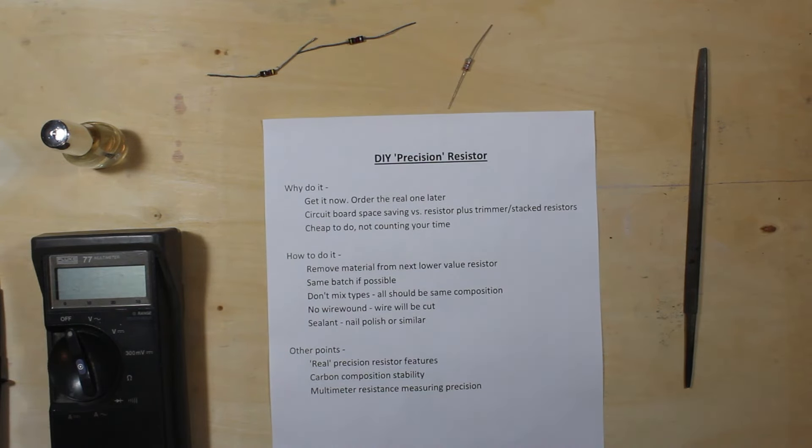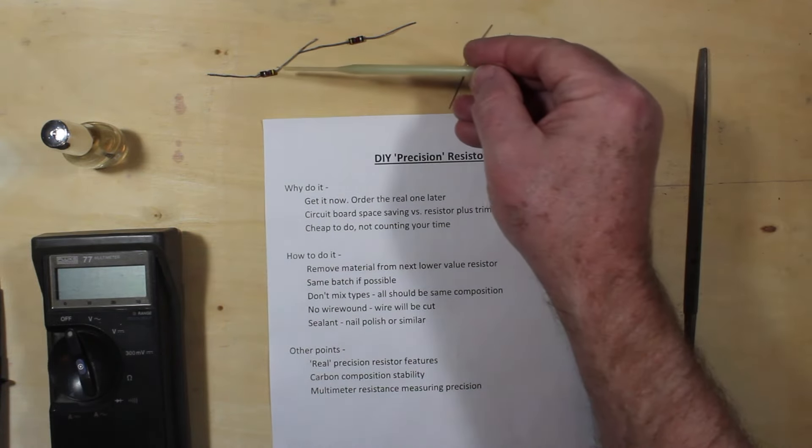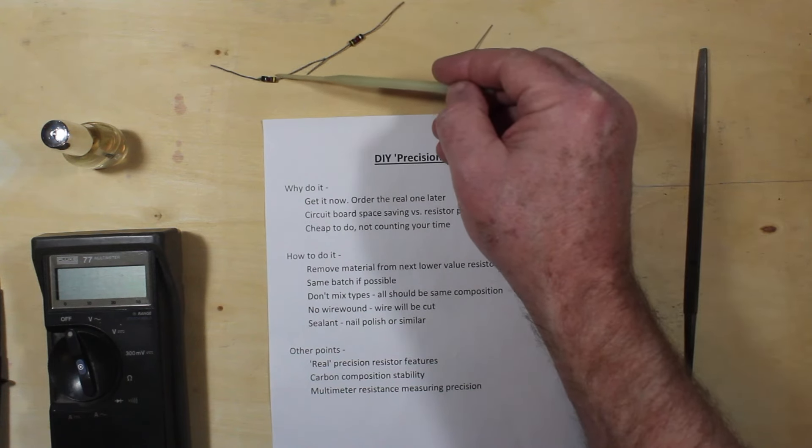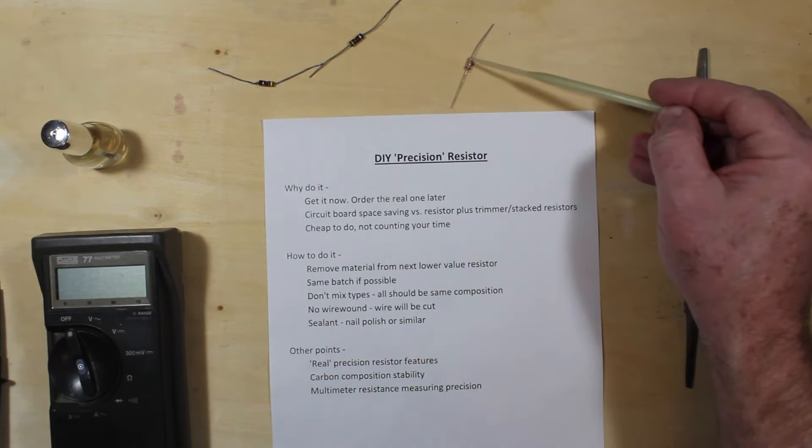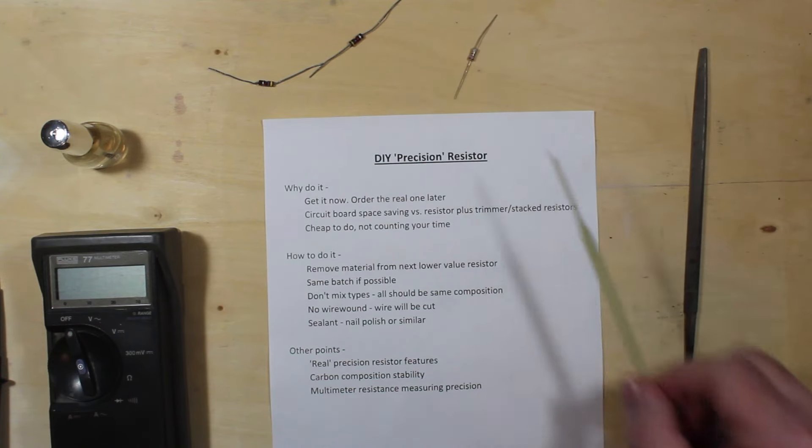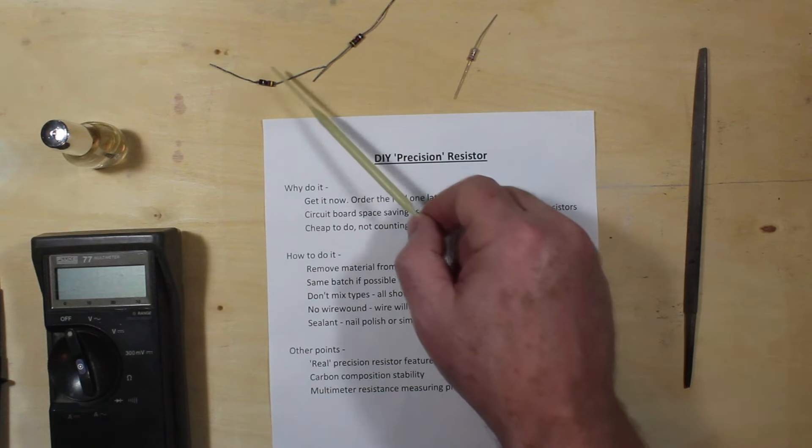Real precision resistors have a lot more features than these guys do. Doing this with carbon composition resistors is fine as long as you understand the shortcomings of carbon composition resistors. The carbon films, metal films and all that have a lot more good things going for them. But these are certainly easy to do.